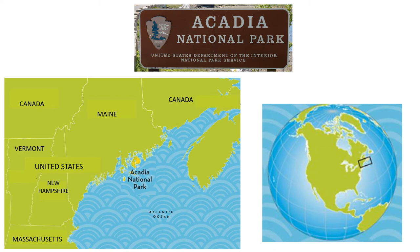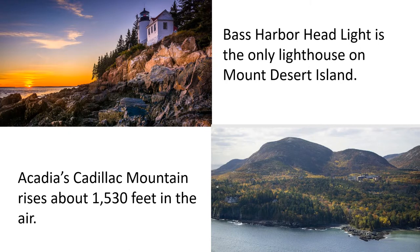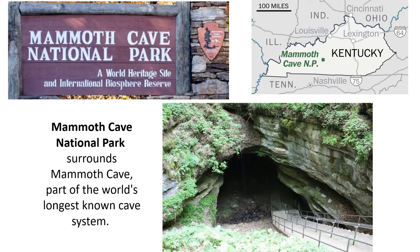We are now going to head far east to the coastland, to the state of Maine and Acadia National Park. Acadia is one of the top 10 most visited national parks in the United States — I was lucky to have been able to visit this park many years ago. Acadia National Park is located on an island named Mount Desert Island. You see in the picture Bass Harbor Head Light — it is the only lighthouse on this island. Acadia's Cadillac Mountain rises about 1,530 feet in the air, and when you go there you can see the entire park.